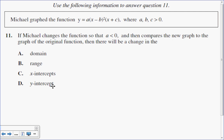In this multiple choice question, I have a polynomial in general where a, b, and c are all positive numbers, and I want to know if I change that polynomial so that a is now negative, which of the following parameters will change?